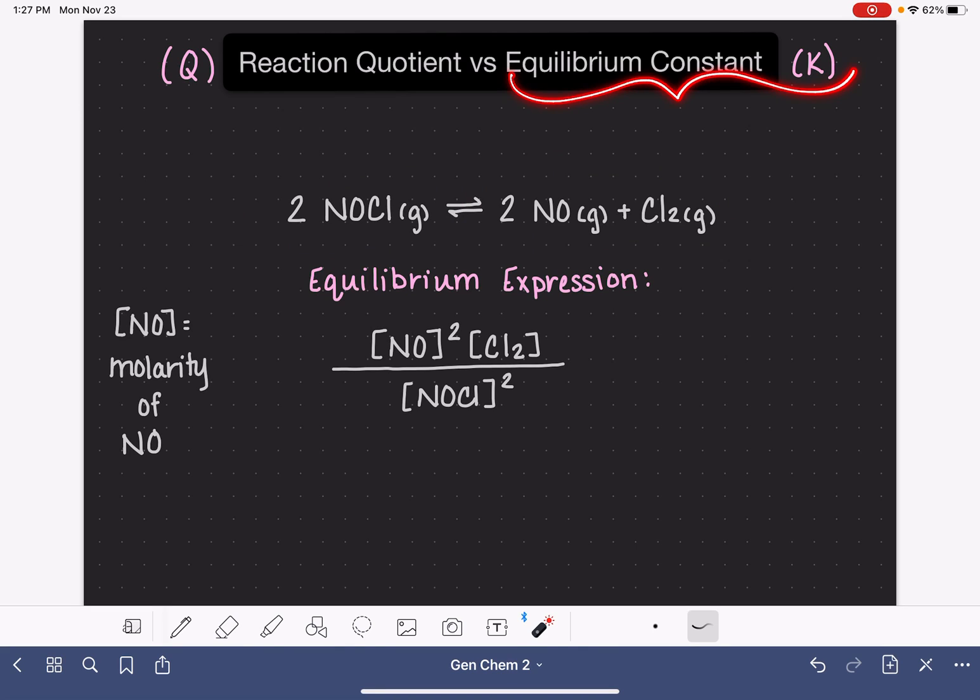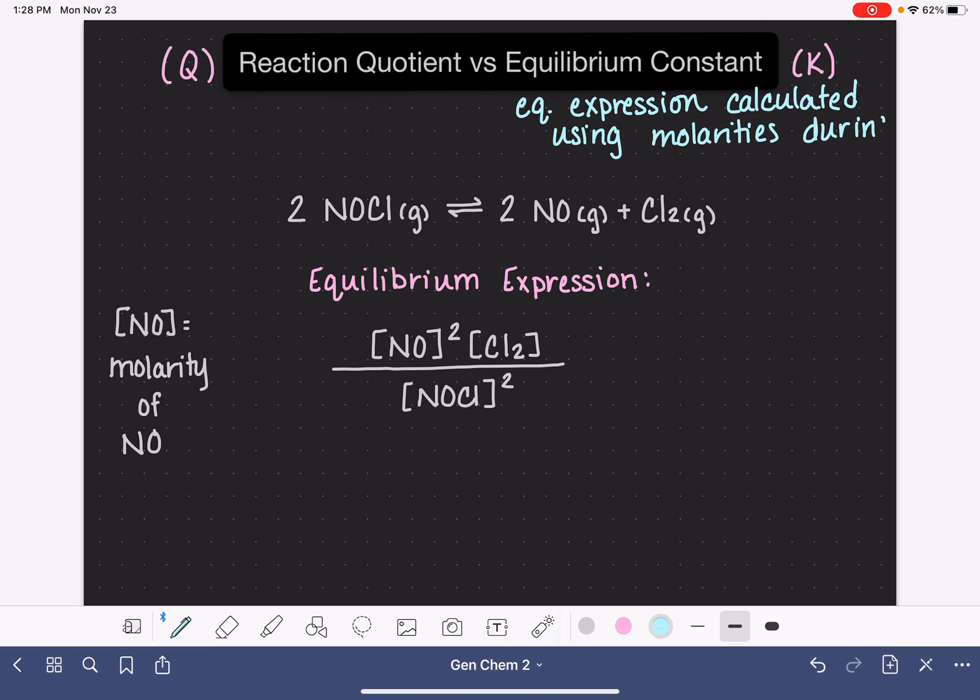then we call this mathematically, the result of this is the equilibrium constant. So this would be an equilibrium expression that is calculated using concentrations, molarities, that are accurate when the system is in equilibrium.